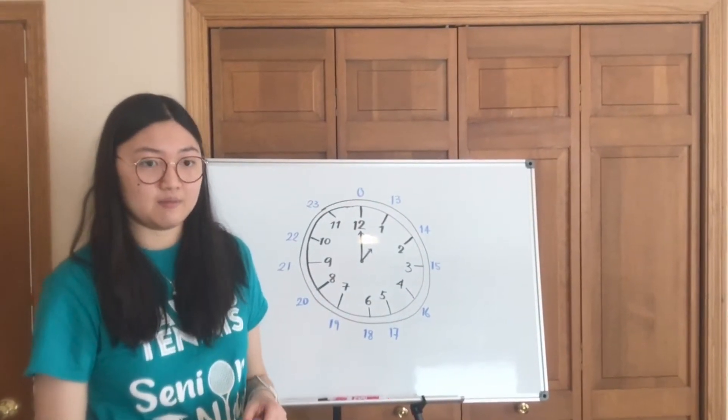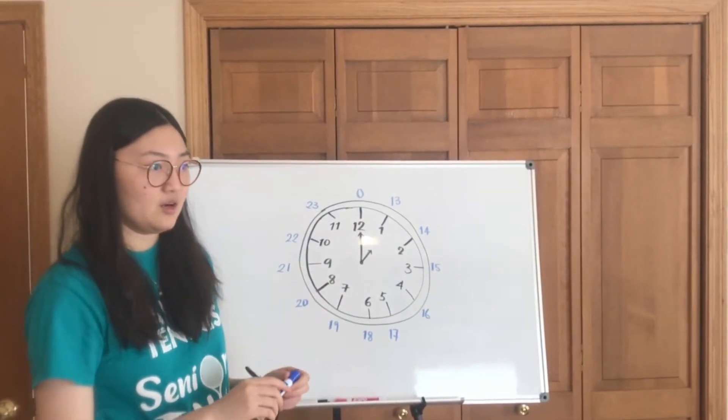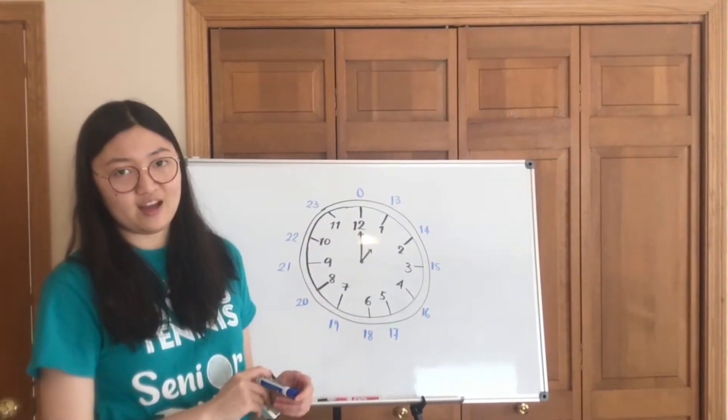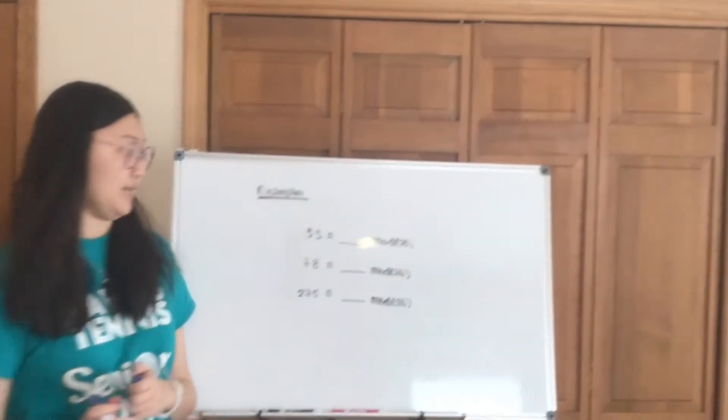And the same concept can be used in modular arithmetic, where basically once you go over 25, you start at 0 again and you start a new round of counting. So here are some examples.